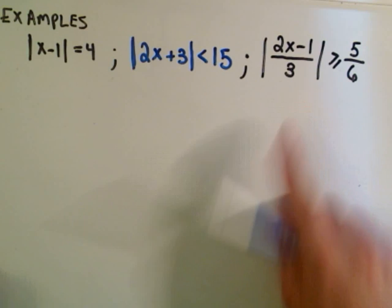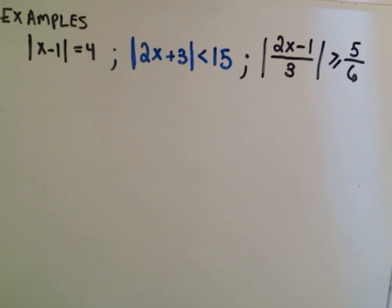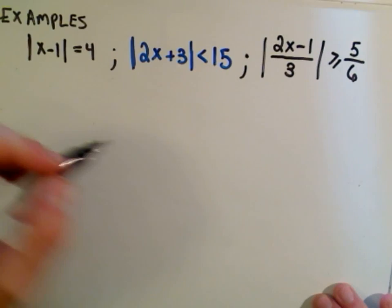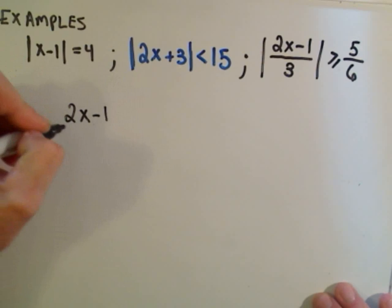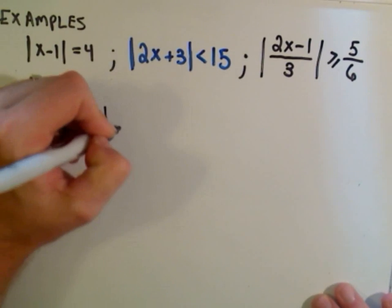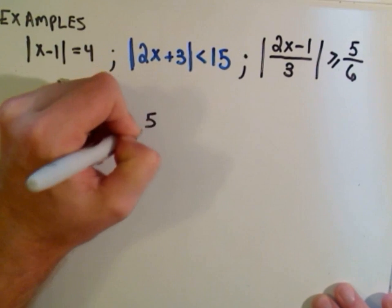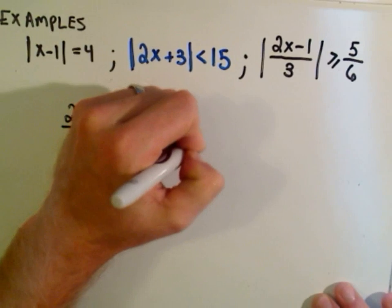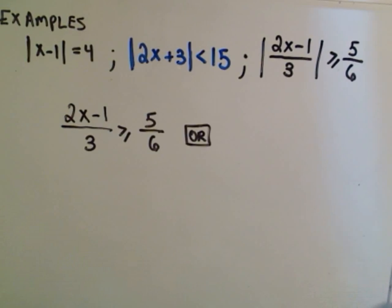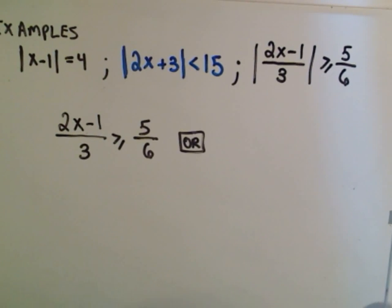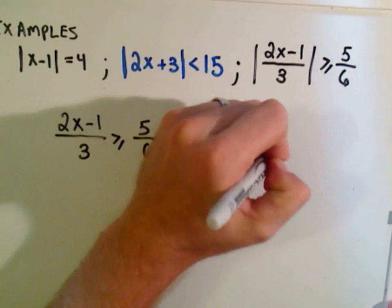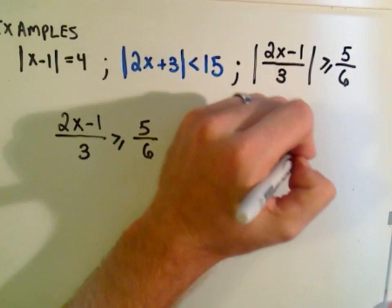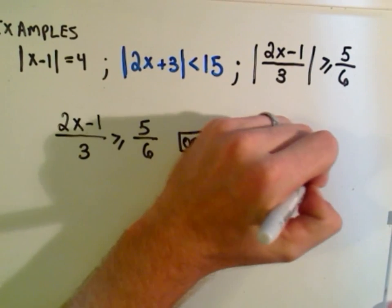Last but not least, we'll do the 2x minus 1 over 3, the absolute value of that, greater than or equal to 5 over 6. So now we have to solve 2x minus 1 over 3 greater than or equal to 5 over 6. Or, the other inequality is 2x minus 1 over 3 less than or equal to negative 5 over 6.